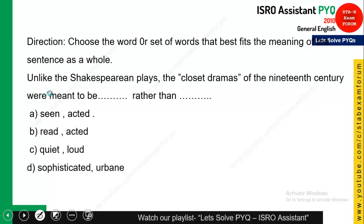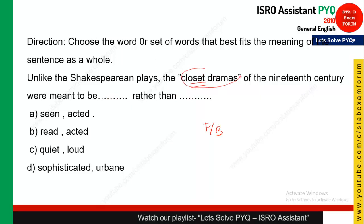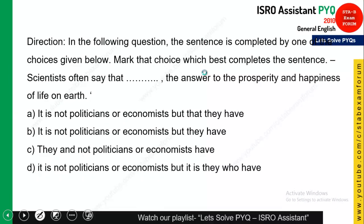This question is from fill-in-the-blanks. The sentence is: 'Unlike the Shakespeare play, the closet drama of the 19th century were meant to be ___ rather than acted.' The key clue is the word 'closet drama' — closet dramas were meant to be read, not performed. So option B, 'read,' is the correct one.